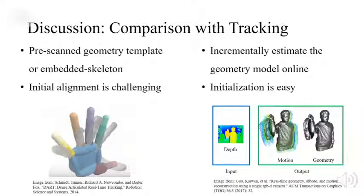Dynamic reconstruction estimates the geometry online. Of course, the estimated geometry is not as complete as an offline-scanned template, and the tracking is less robust. However, the setup and initialization is rather easy.